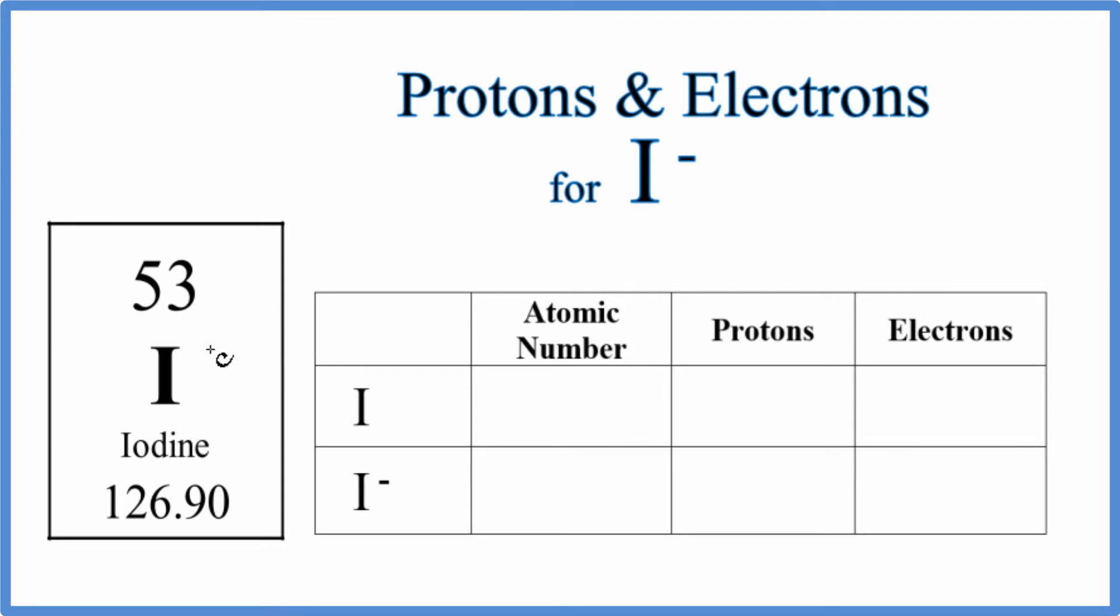On the periodic table, iodine doesn't have a negative or positive sign, so this is a neutral element. We look at the atomic number here, and with a neutral element, the number of protons and the atomic number are the same. So this 53 atomic number is the same as the number of protons for iodine.